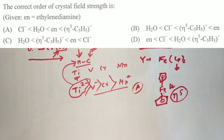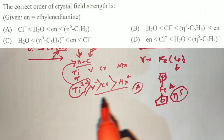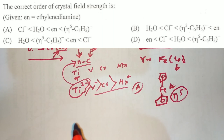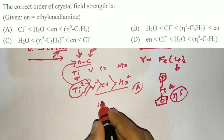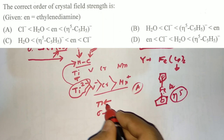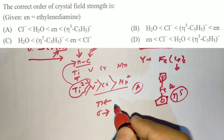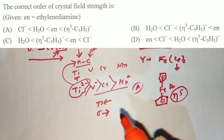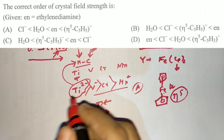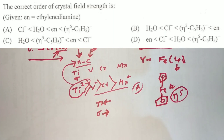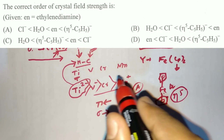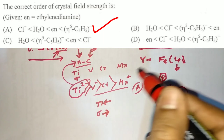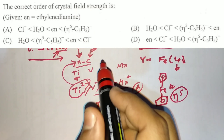The next question asks for the correct order of crystal field strength. You need to know the spectrochemical series — the ligand with the highest π-acceptor and σ-donor capability has the highest crystal field strength. The final order is: Cl⁻, then H2O, then en, then η5-Cp. You should find the spectrochemical series from any standard book or Wikipedia and read it once.